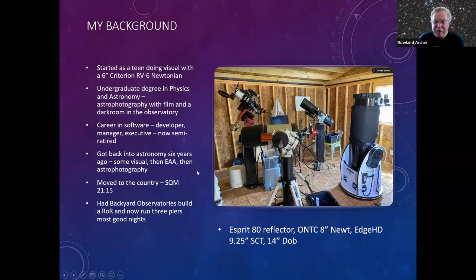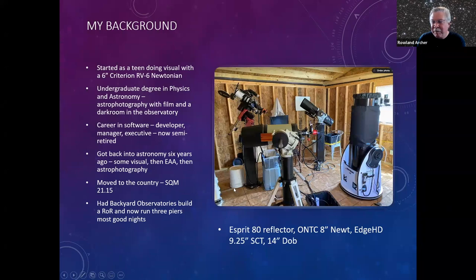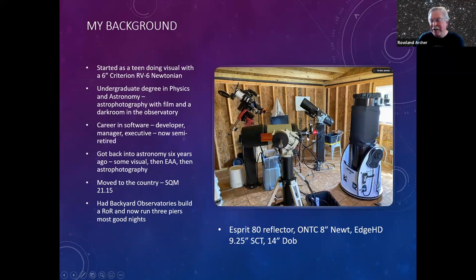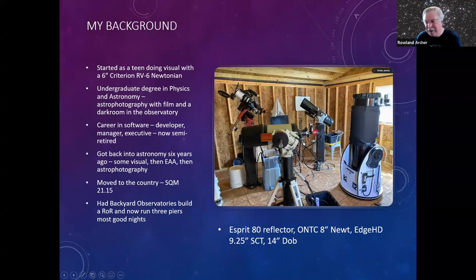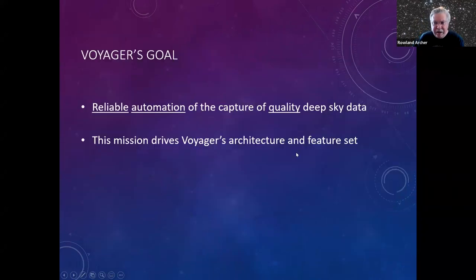About six years ago I got back into astronomy, started with some visual, then a little bit of EAA, and quickly decided I wanted to go deep with astrophotography. Two years ago we moved to a little darker location — SQM 21 — so I could see the Milky Way again for the first time since I lived in New York 50 years ago. I had the folks from Backyard Observatories come out and build this roll-off roof. Since I couldn't pick a focal length, I got three piers — an S380 for 400mm wide field, an ONTC 8-inch Newtonian at 940mm, and a 9.25-inch Edge HD SCT at 1645mm focal length.